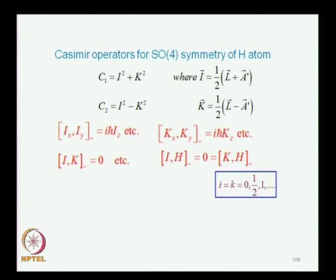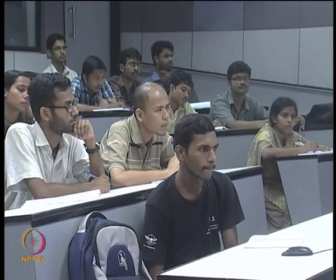The Casimir operators C1 and C2 on the screen — it is not such a big surprise that they are J² + K² and J² − K², because from Racah's theorem we know that the number of Casimir operators equals the rank. We also know from Racah's theorem that a suitable bilinear construct of the generators gives you the Casimir. The generators are the angular momentum and the Pauli-Lenz vector operators, so you construct the bilinear out of L² and A².